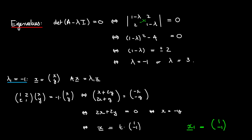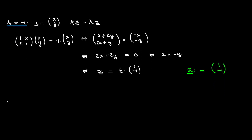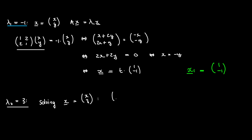We still have one more: we need to calculate the eigenvectors corresponding to lambda₂ equal to 3. We're solving A*x = lambda₂*x again. So we have x + 2y and 2x + y on the left, which must equal 3x and 3y respectively.